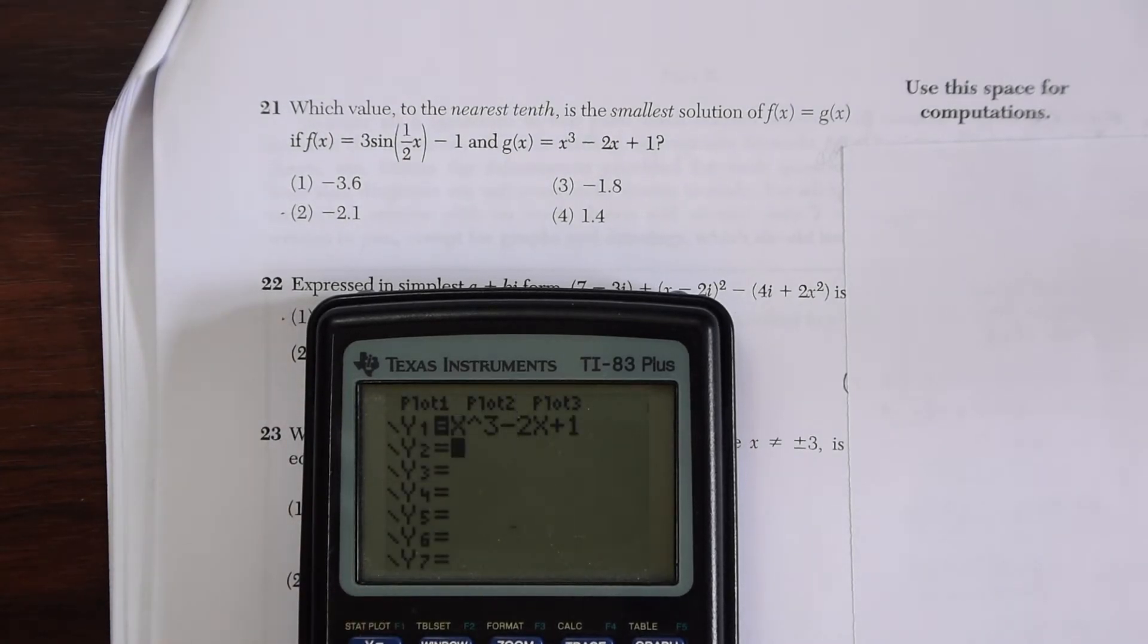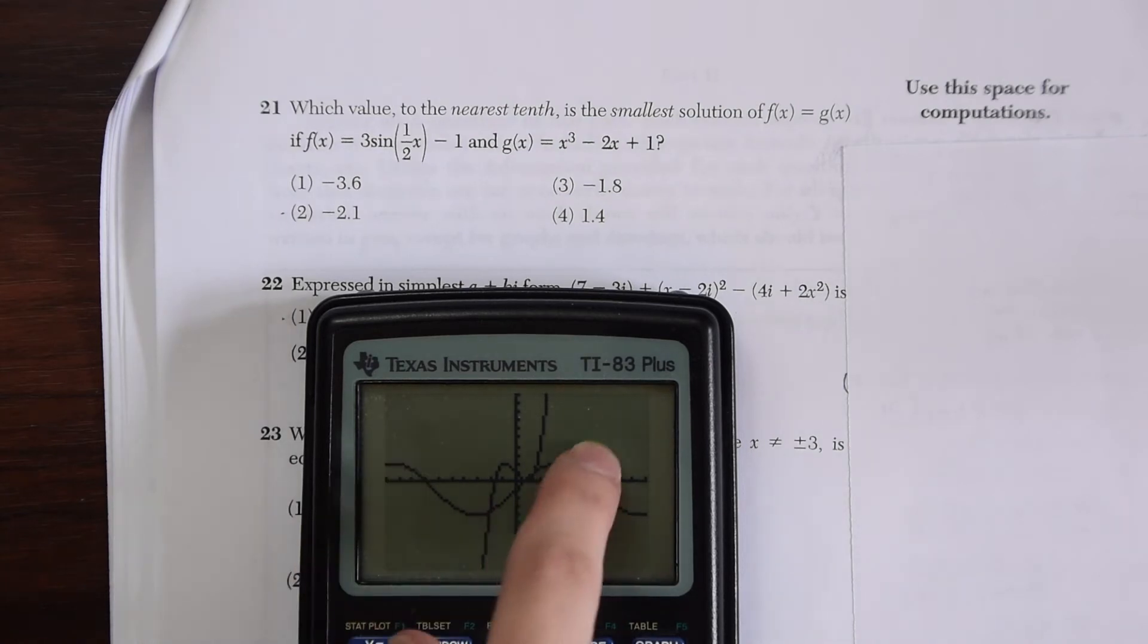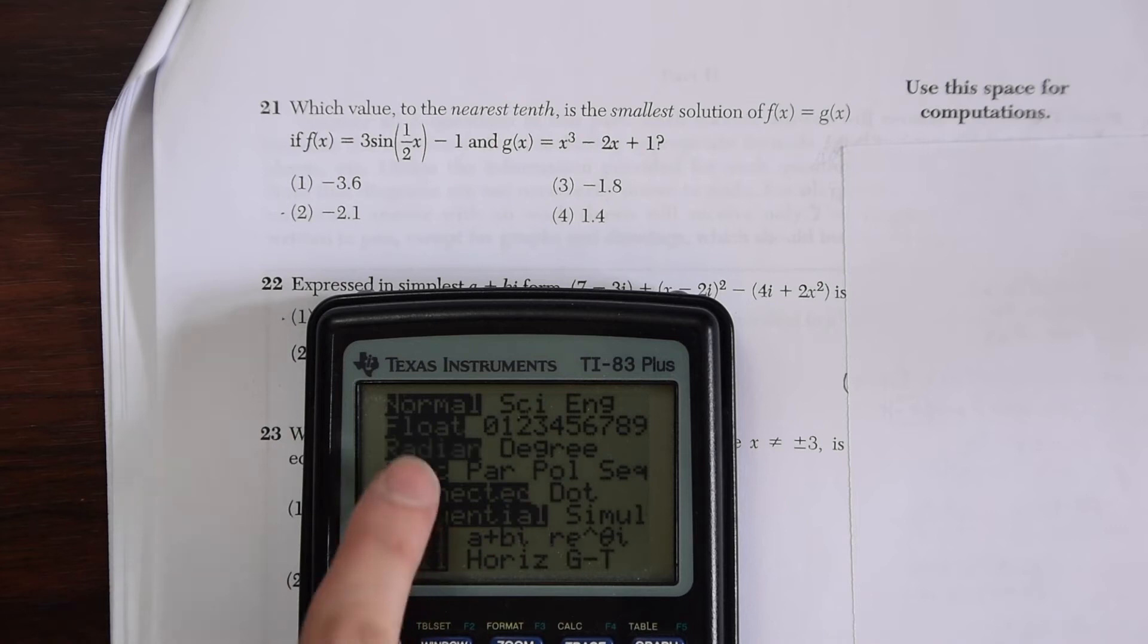Now let's go to y2 and put in 3 sin of 0.5x close parentheses minus 1. Let's graph it and see what happens. Just be careful here because we want to make sure—I have this nice curve that this is what it's supposed to look like, but just make sure if you don't have that, make sure that you are in radian mode.